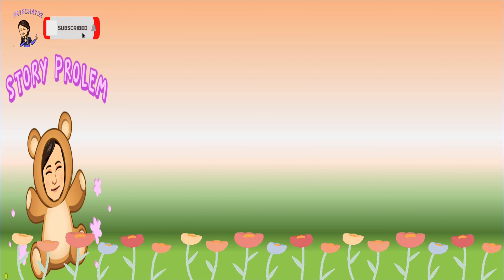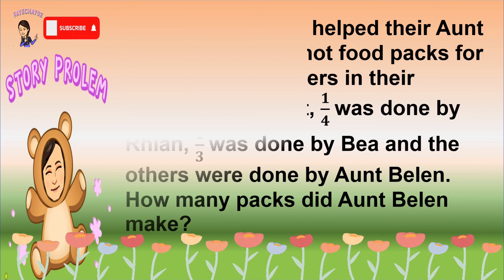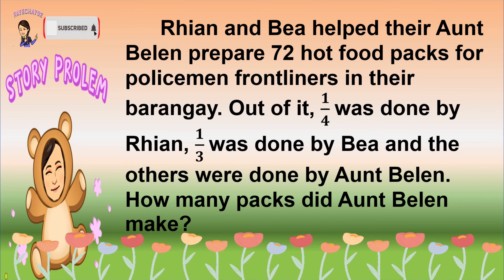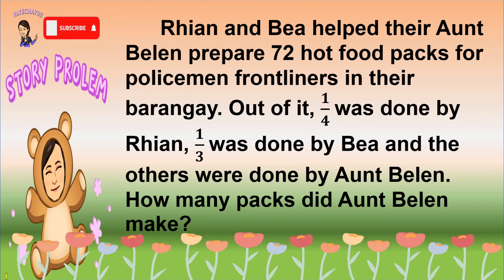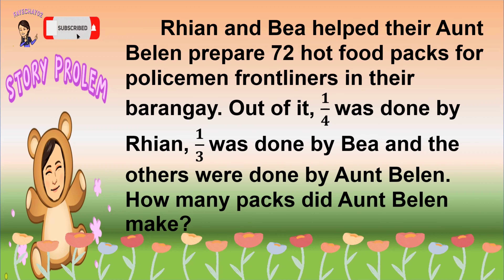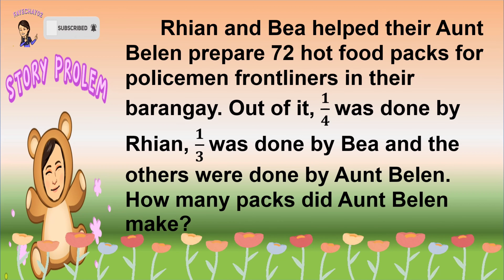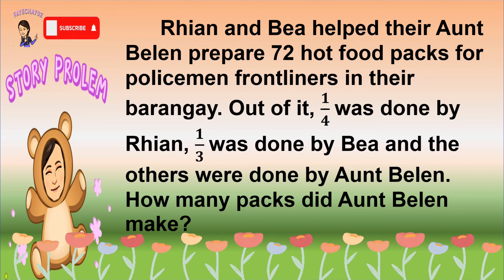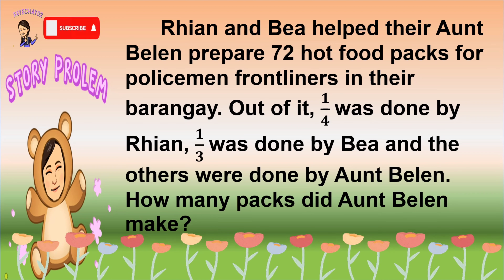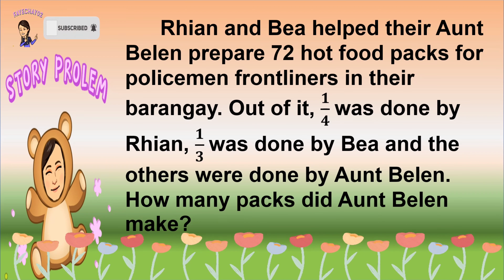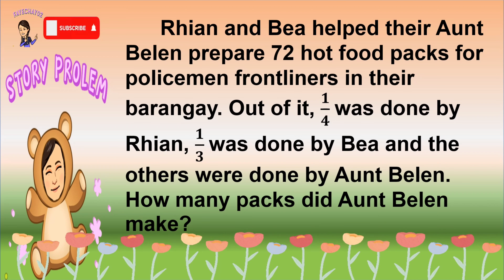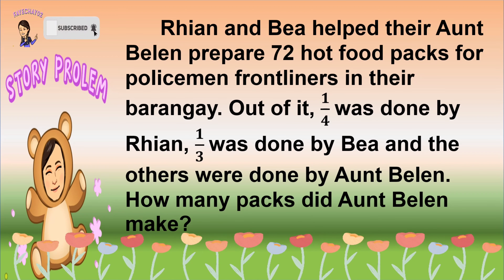For our story problem number 1: Rian and Bea helped their Aunt Belen prepare 72 hot food packs for policeman frontliners in their barangay. Out of it, one-fourth was done by Rian, one-third was done by Bea, and the others were done by Aunt Belen. How many packs did Aunt Belen make?